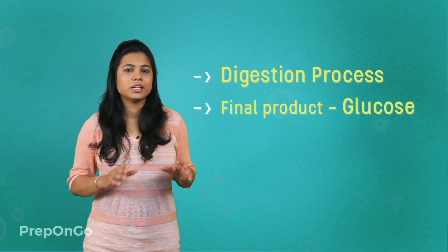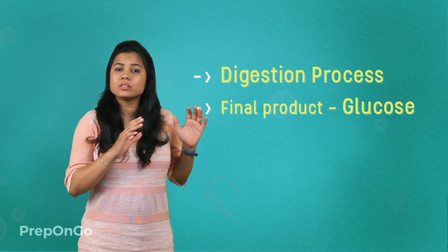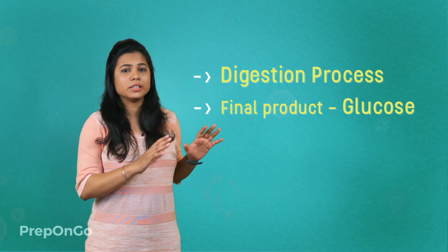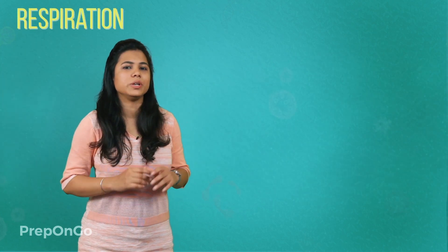Hello everyone. In the last video we have seen the digestion process where the glucose was formed. Now this glucose which is formed in the digestion process is utilized in the respiration process to release energy. So we are going to see the respiration system in this video.